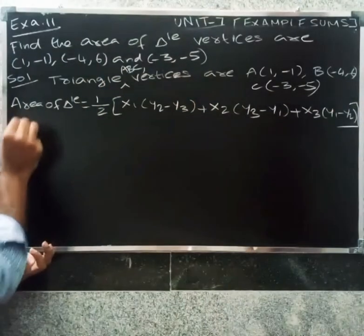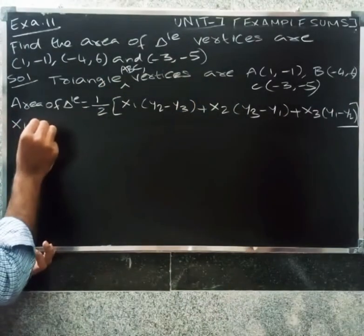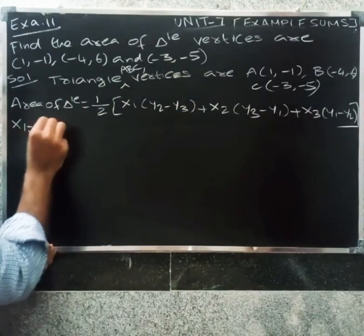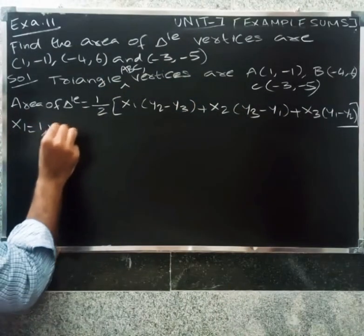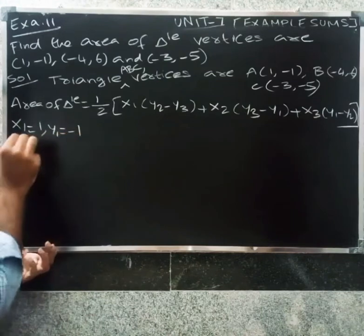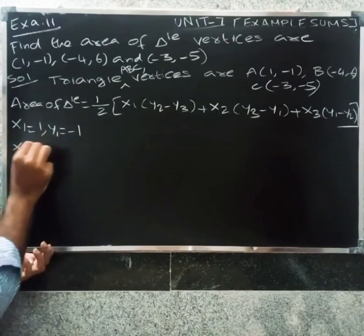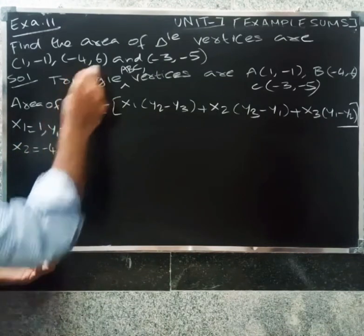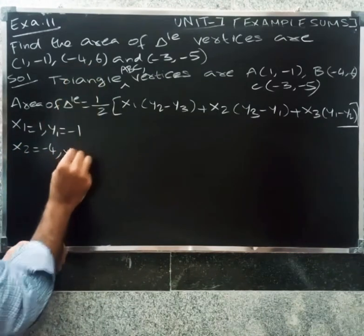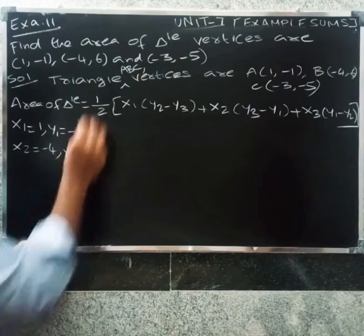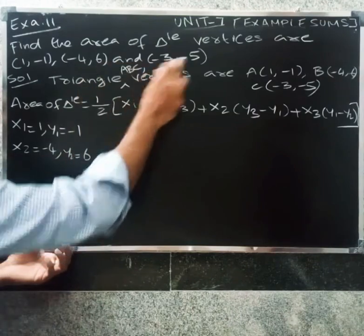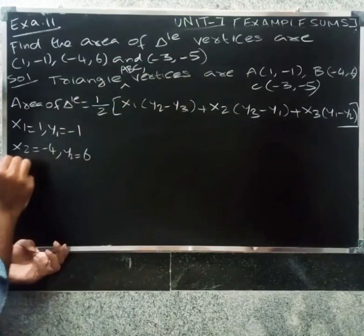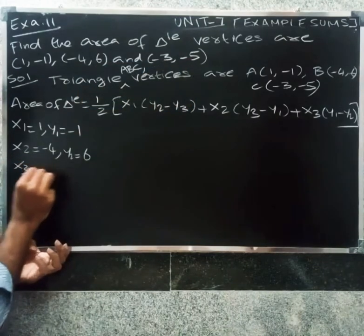Area of triangle formula: area equals 1 by 2 into x1 into (y2 minus y3) plus x2 into (y3 minus y1) plus x3 into (y1 minus y2). Here x1 equals 1, y1 equals 1, x2 equals -4, y2 equals 6, x3 equals -3, y3 equals -5.